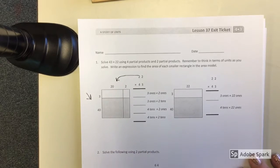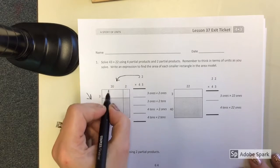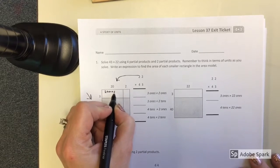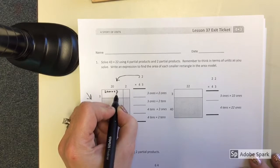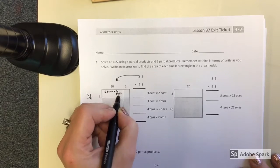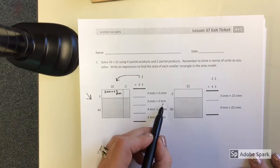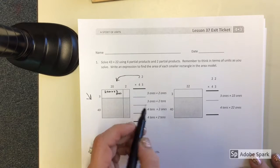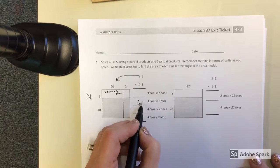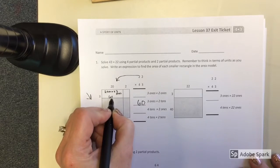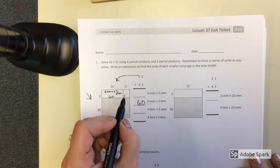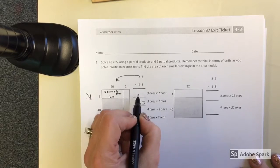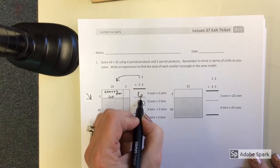So I'm thinking 20 times 3, well that would be 2 tens times 3 ones. 2 tens times 3 ones. And that's going to get me 60. Then I have to think 2 ones times 3 ones. That's going to get me 6.